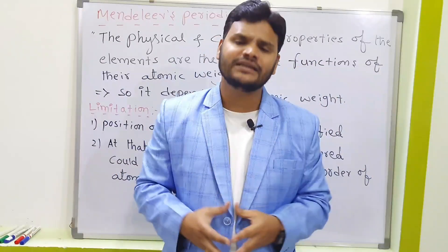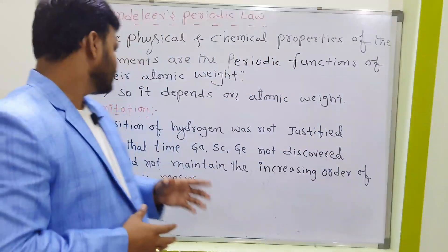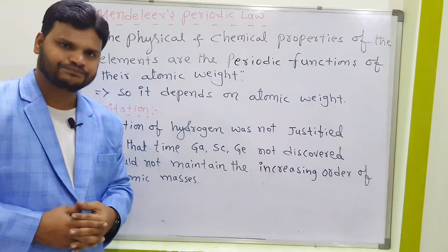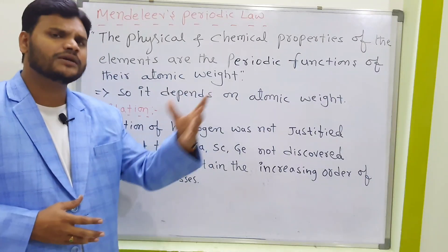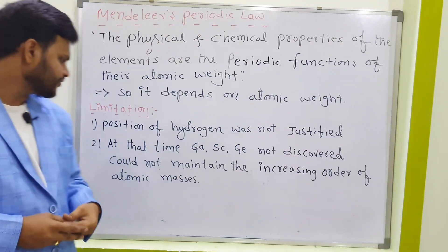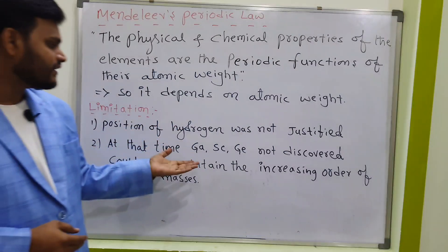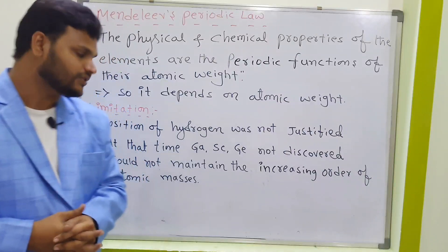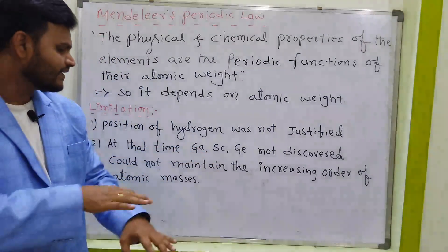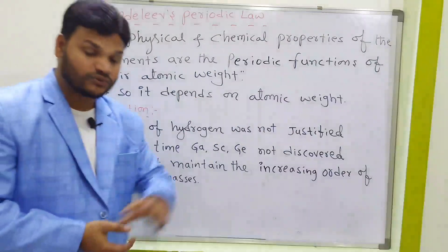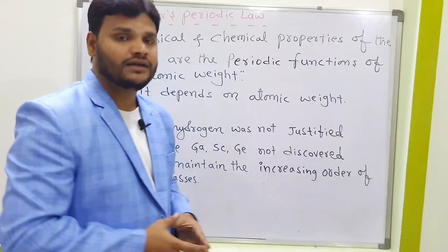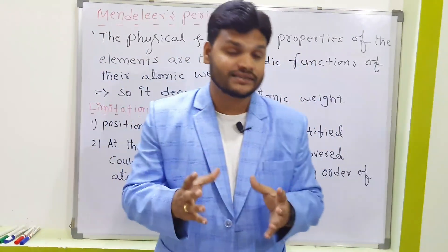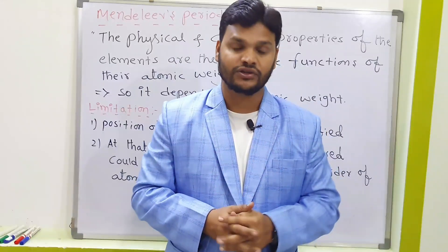This concept is based on atomic weight. The limitations of Mendeleev's periodic law include: the position of hydrogen was not justified; elements gallium, scandium, and germanium were not yet discovered at that time; and he could not maintain the increasing order of atomic masses consistently. But this theory also had several achievements.